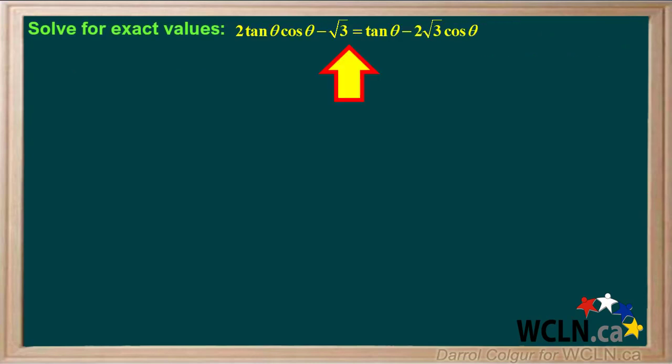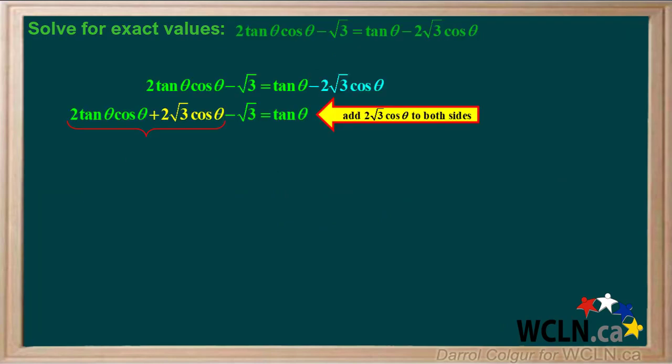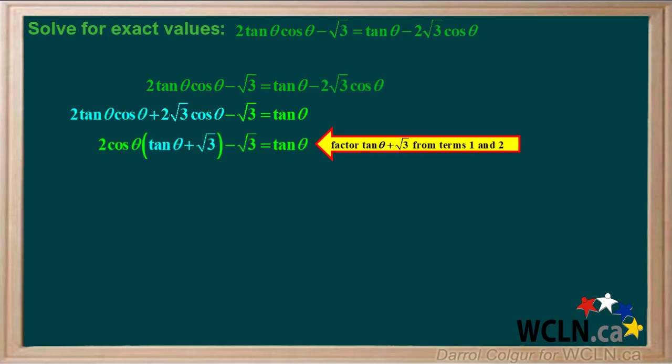We're asked to solve this equation for exact values and determine values for angle theta. We'll start by adding 2 root 3 cos theta to both sides of the equation, and then group the first two terms on the left. We can factor tan theta plus root 3 from terms 1 and 2 on the left side to give us this.